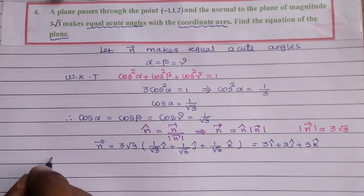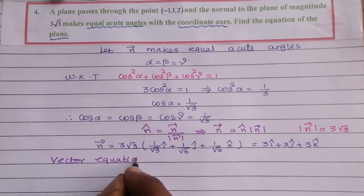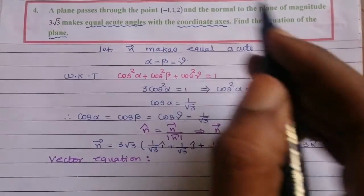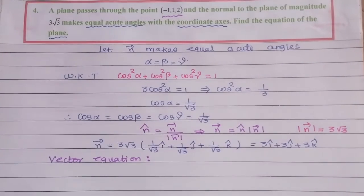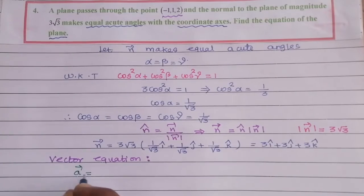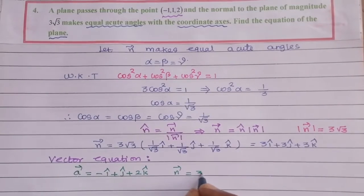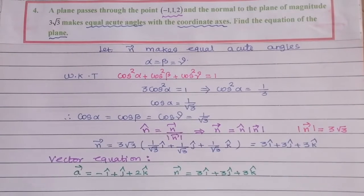Next is the vector equation. The plane passes through the point minus 1, 1, 2. So position vector a = −î + ĵ + 2k̂, and n-vector = 3î + 3ĵ + 3k̂.